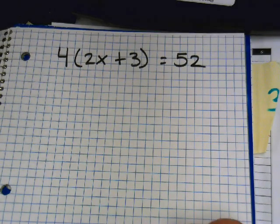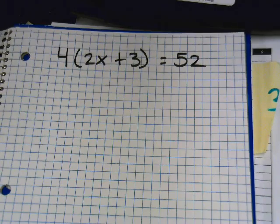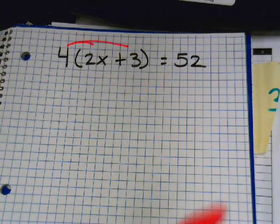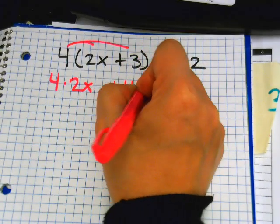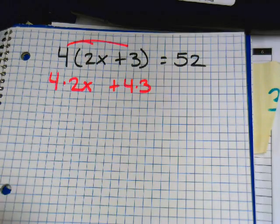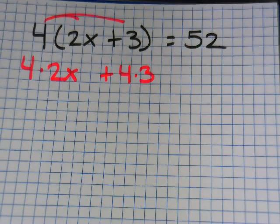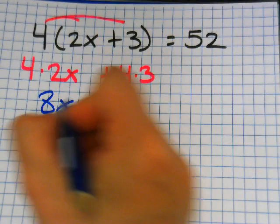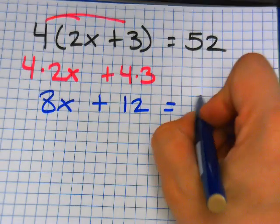Alright, trick or treat first. What do we give everybody? Everybody gets a 4. 4 times 2x plus 4 times 3. What's 4 times 2x? 8x. Plus, what's 4 times 3? 12. All equals 52.